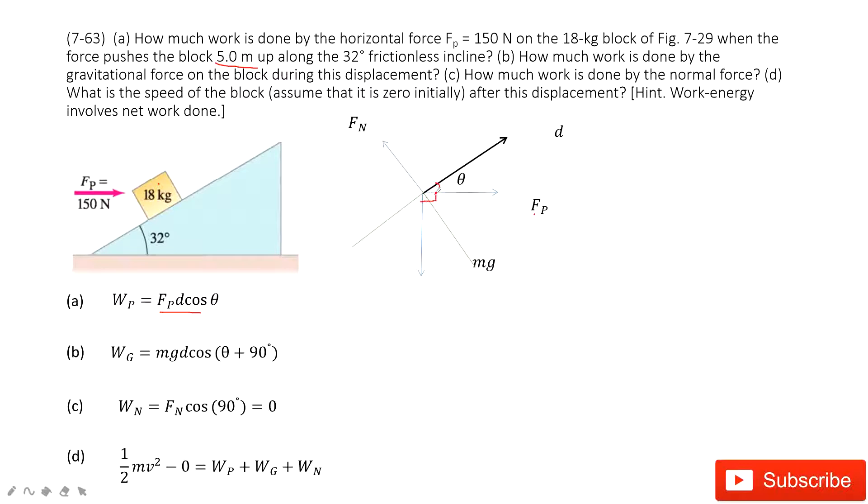This one is 90 degrees, this one is theta. So this angle must be 90 degrees plus theta. So you can see mg is given, d is given, theta is given. So very easily you can find the work done by gravity.